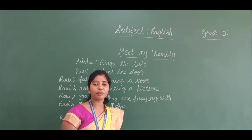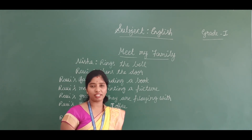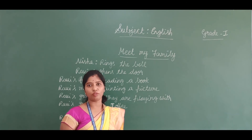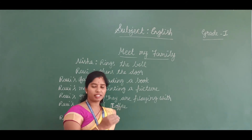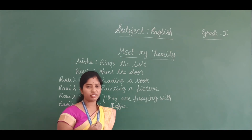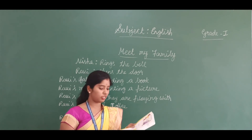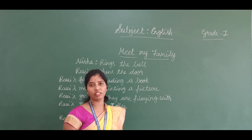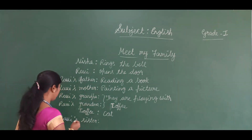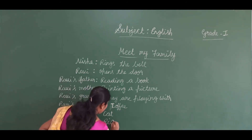If you hurt anyone, what do you have to say? You have to say sorry. In the same way, Ravi says sorry to Nisha and introduces his little sister Riya. She is very naughty. Who is Ravi's sister? Ravi's sister is Riya.